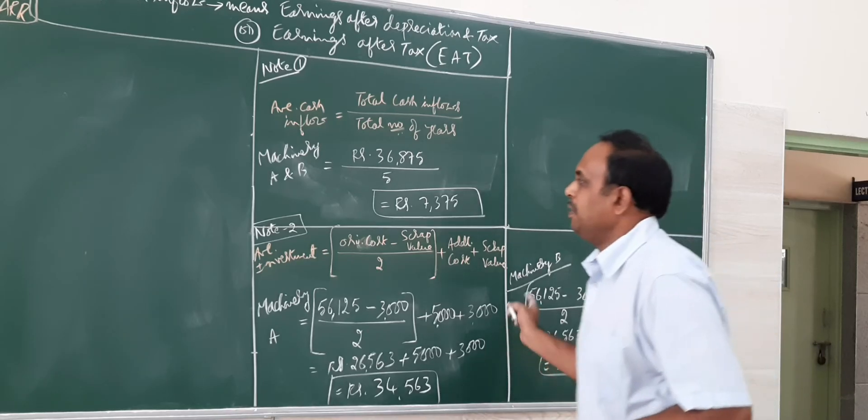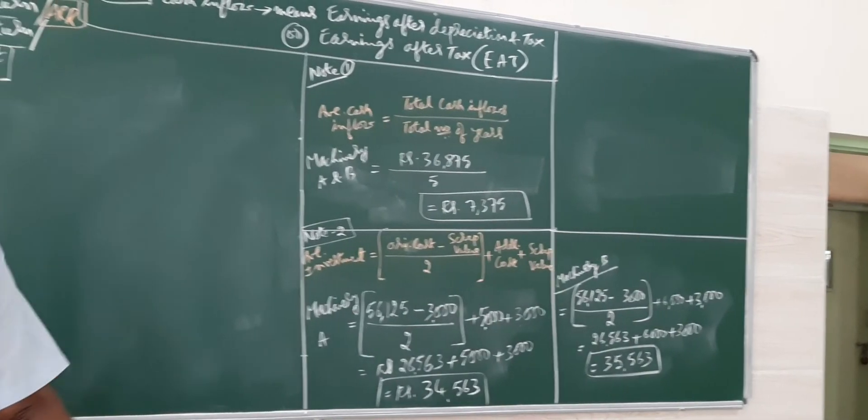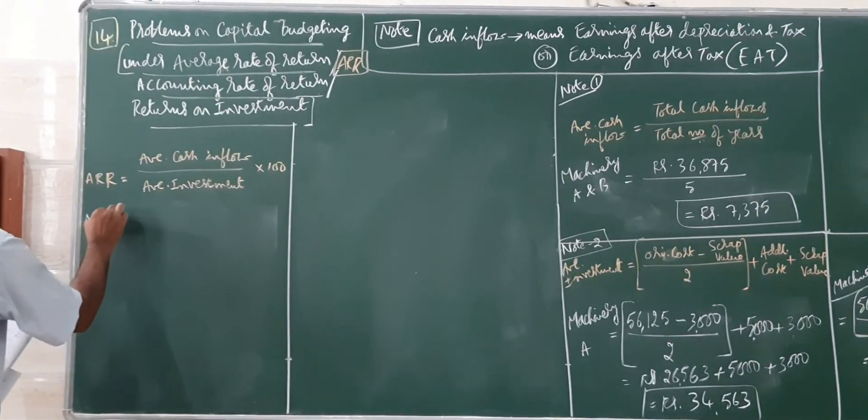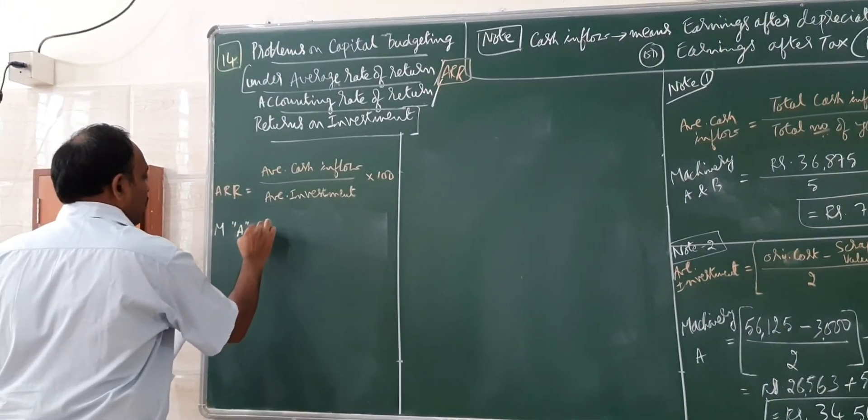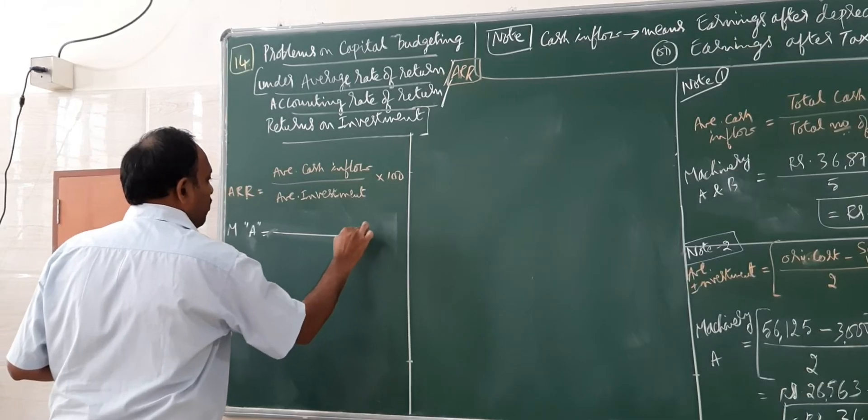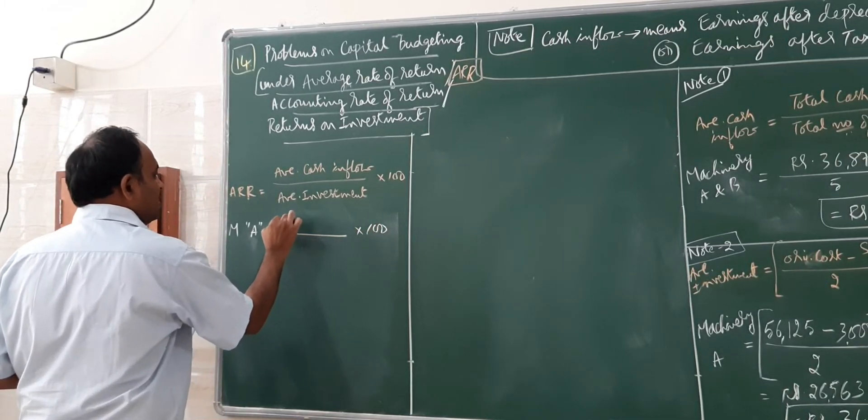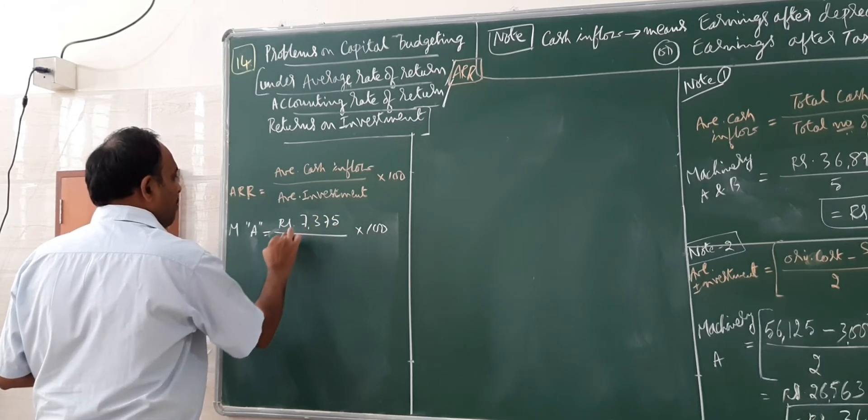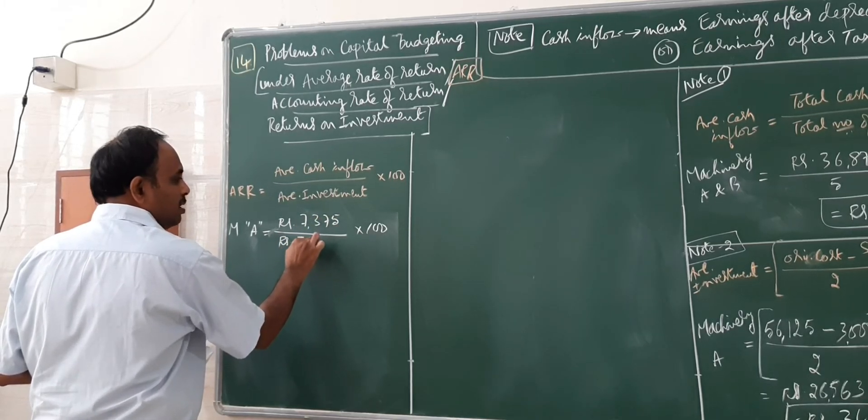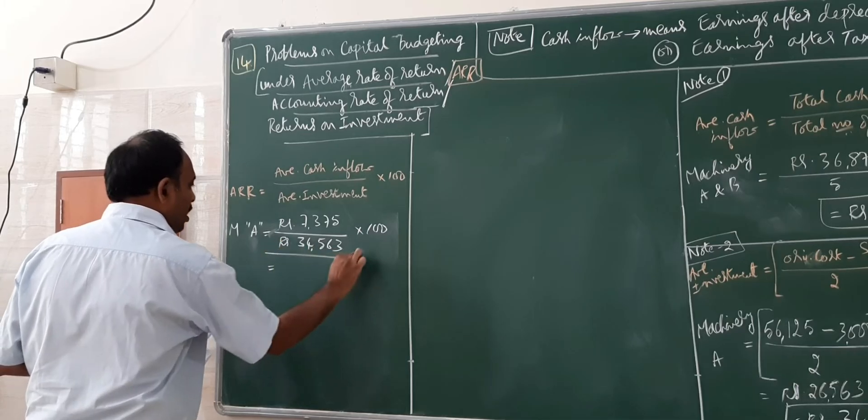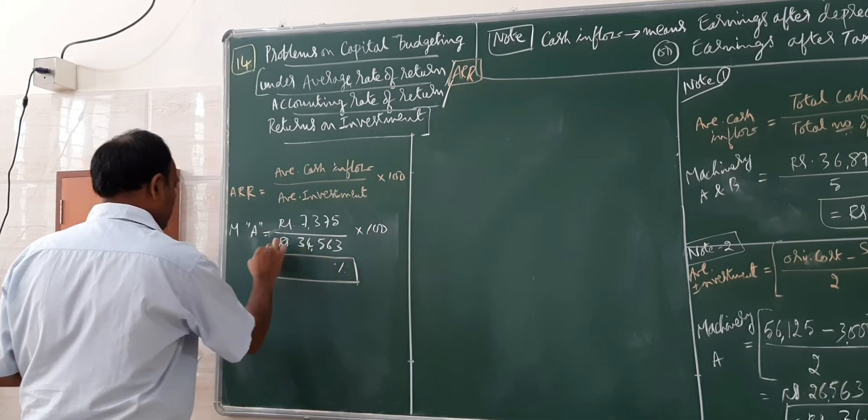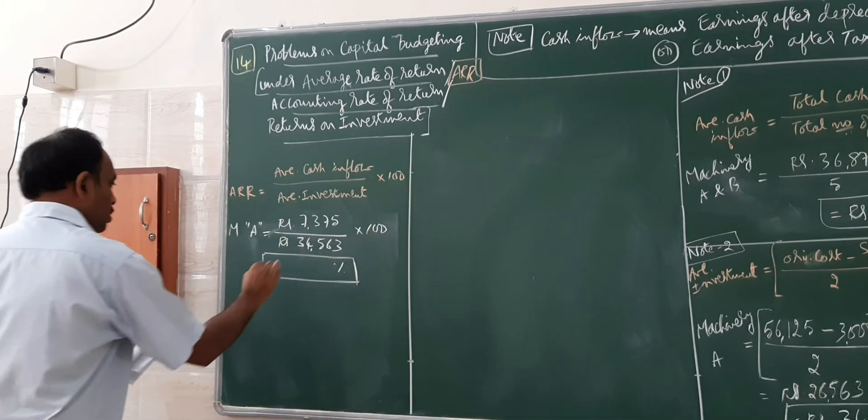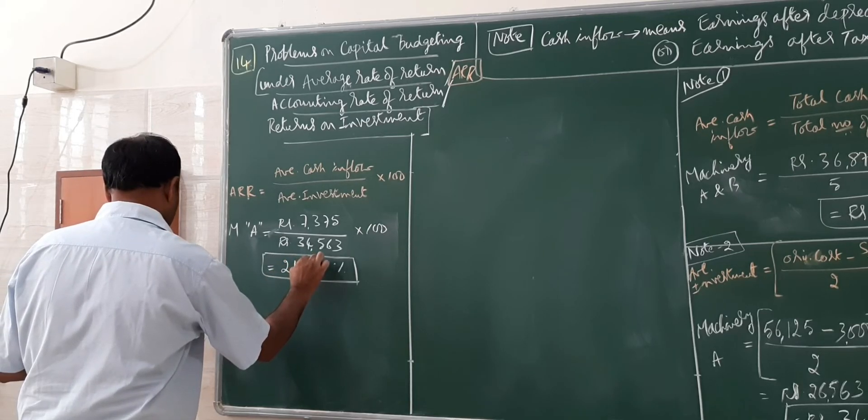So let me now go for calculation of ARR. I have got for both now. So machinery A, average cash inflow 7,375, average investment 34,563 into 100. It comes to 21.337%.